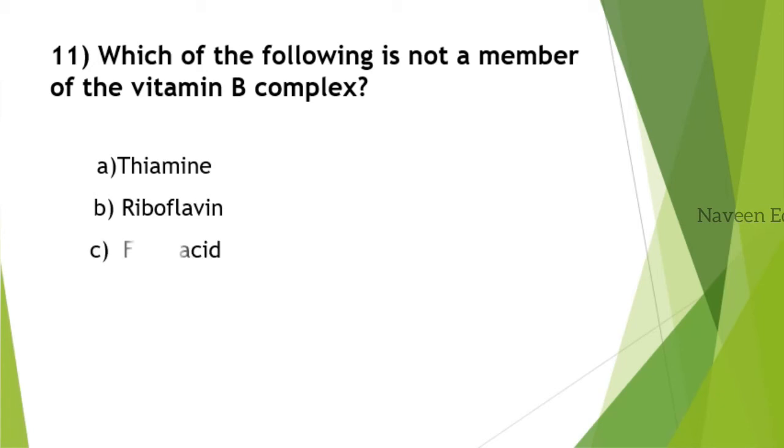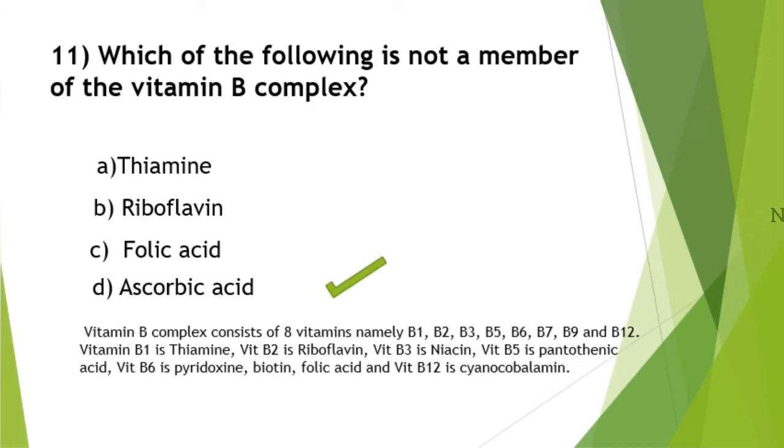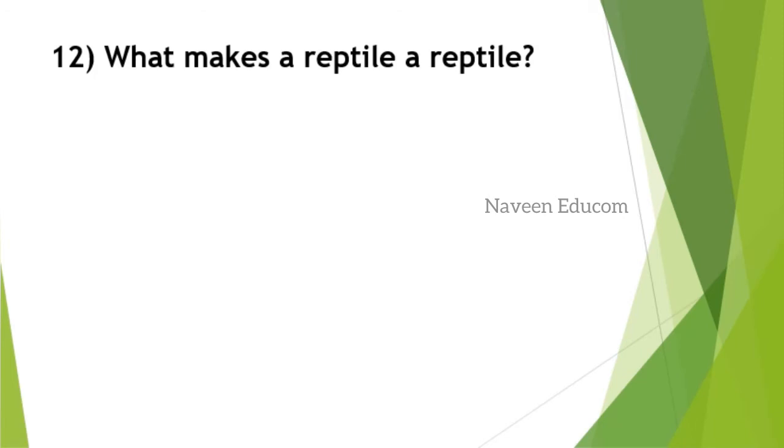Which of the following is not a member of the vitamin B complex? Please study all these important subtopics related with vitamin B complex. The answer is option D, ascorbic acid. Vitamin B complex consists of eight vitamins. These are very important. Please note this: B1 thiamine, B2 riboflavin, B3 niacin, B5 pantothenic acid, B6 pyridoxine, B7 biotin, B9 folic acid, and B12 cyanocobalamin.